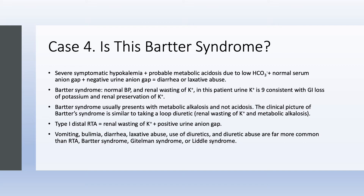With Bartter syndrome we would also expect metabolic alkalosis, not acidosis. Bartter syndrome is like taking a loop diuretic — renal wasting of potassium and metabolic alkalosis — so this picture does not fit Bartter at all. Type 1 distal RTA would also show renal wasting of potassium and a positive urine anion gap. Here we have neither. Vomiting, diarrhea, laxative abuse, bulimia, and diuretic use are far more common causes of hypokalemia than Bartter, Gitelman, or renal tubular acidosis — you must consider those first.